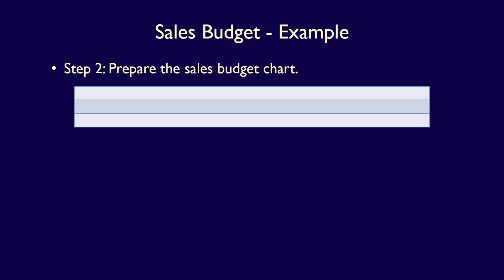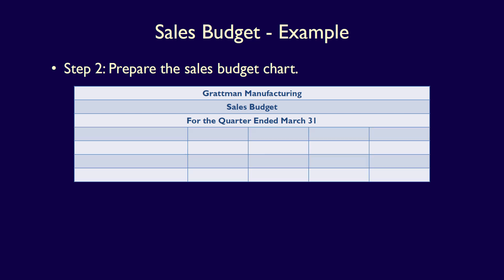We start with the title of the budget, including the company name — Gratman Manufacturing — the title of the budget — sales budget — and the period of time covered for the quarter ended March 31st. We then add the necessary columns. Since we're completing the budget for the months and the quarter, we have one column for the descriptions, three columns for the months, and one column for the quarter — a total of five columns. The headings are: description, each of the months — January, February, and March — and finally the total column, named first quarter.